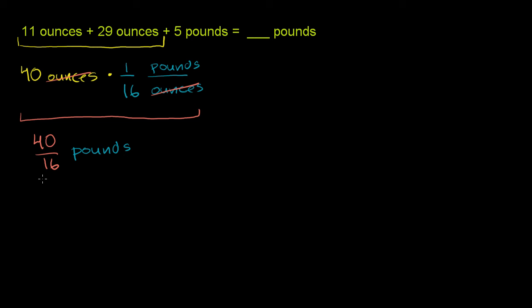Let's see if we can simplify this. Both of these numbers are divisible by 8. So let's divide them both by 8. If you divide 40 by 8 you get 5. Divide 16 by 8, you get 2. So it's 5 halves. Let's write this as a decimal. This is 5 divided by 2.